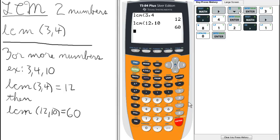Which is 60. If we need to find it for a fourth number, let's say 3, 4, 10, and another number, all we do is find LCM, 60, comma, and the fourth number. And we can just repeat as many times as we'd like.